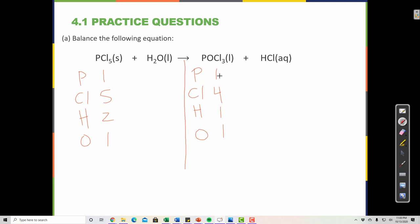So phosphorus is already balanced, so we don't need to do anything there. Let's skip chlorine. So let's go down to hydrogen then. I have two hydrogens on this side and one hydrogen on this side. So I should put two right here.